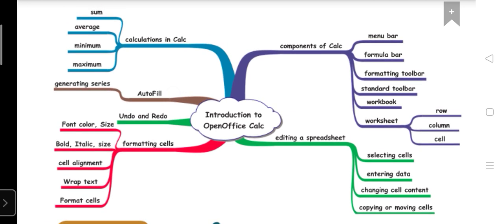Then we learn about autofill that is used for generating series. For example, whenever you are writing Monday, Tuesday, then it will be used for the autofill till Sunday.